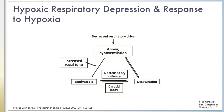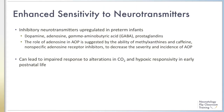During exposure to hypoxia, neonates exhibit a biphasic ventilatory response: an initial increase in ventilation lasting one to two minutes, followed by respiratory depression often below baseline — called hypoxic ventilatory depression. The initial increase is caused by stimulation of peripheral chemoreceptors, while the later decrease is caused by a reduction in breathing frequency with preservation of tidal volume. Multiple inhibitory neurotransmitters, including dopamine, adenosine, GABA, and prostaglandins, have been implicated in apnea of prematurity by disturbing breathing at both peripheral and central chemoreceptors, and may be upregulated in early life with enhanced chemoreceptor sensitivity.